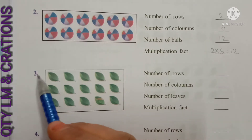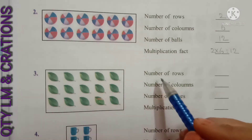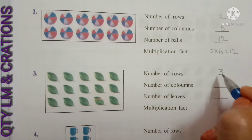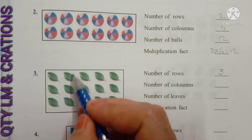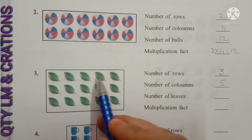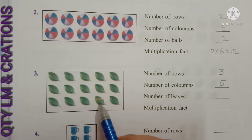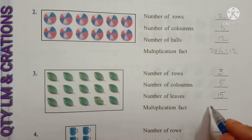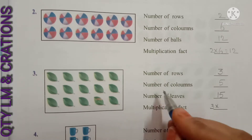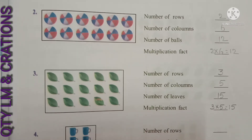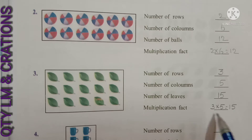Multiplication fact: two rows into six columns equals twelve — six twos are twelve. Next question: in this box there are some leaves. Number of rows — one, two, three — three rows. Number of columns — one, two, three, four, five — five columns. Number of leaves — fifteen leaves are there in the box. Multiplication fact: three rows into five columns — five threes are fifteen. So three into five equals fifteen. This is nothing but a table — three fives are fifteen.